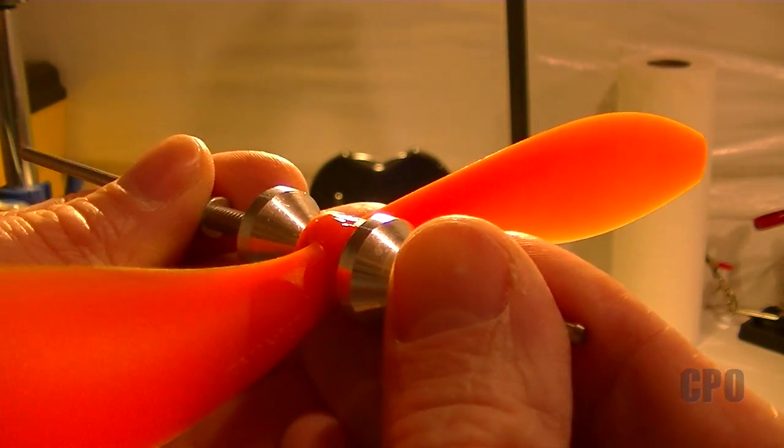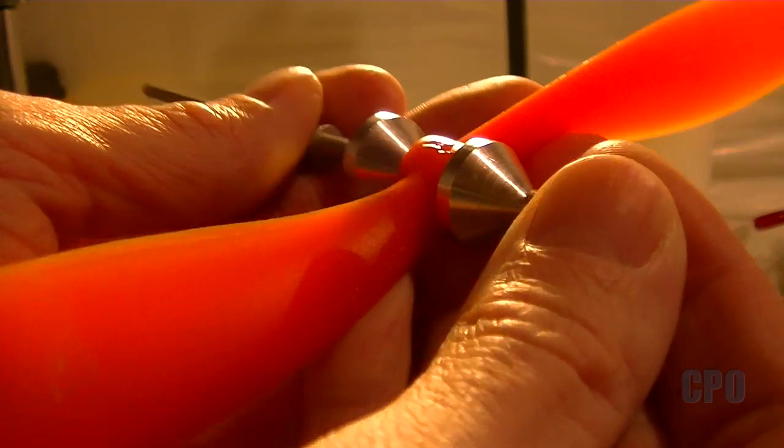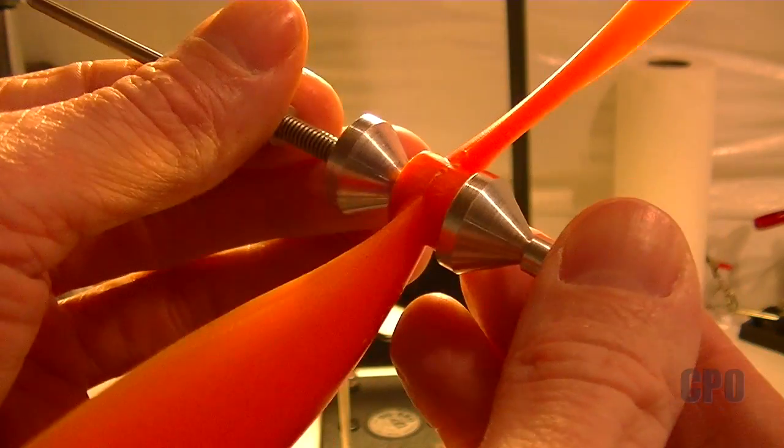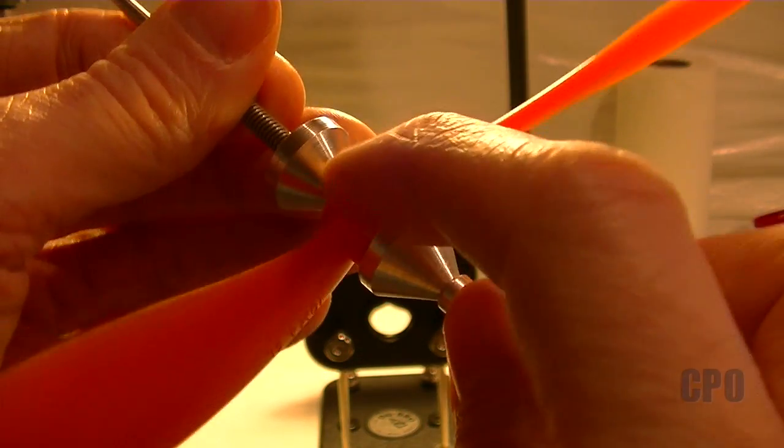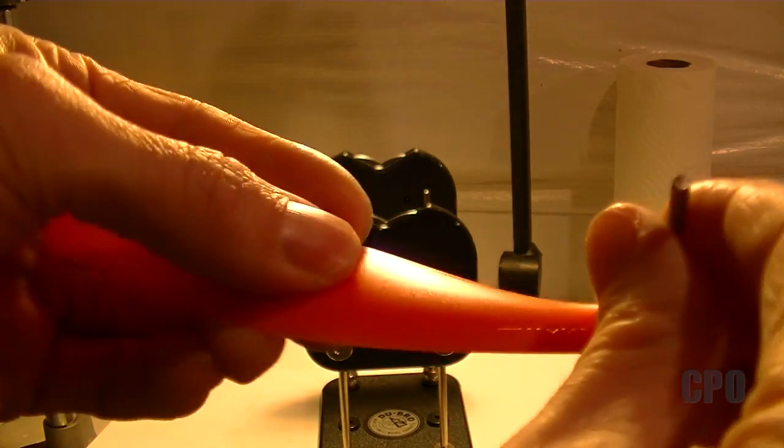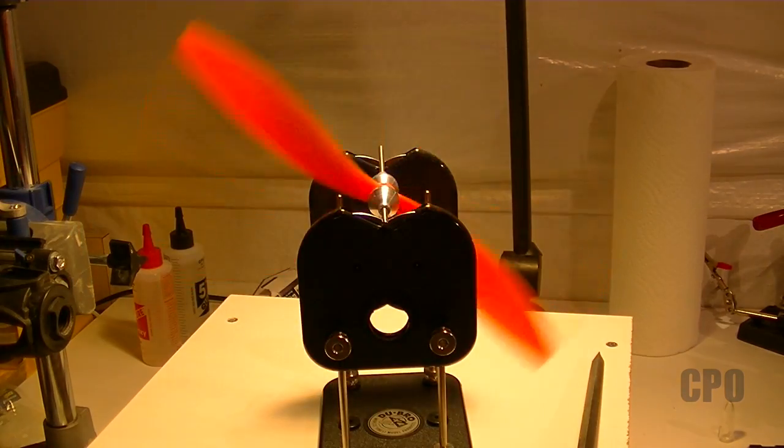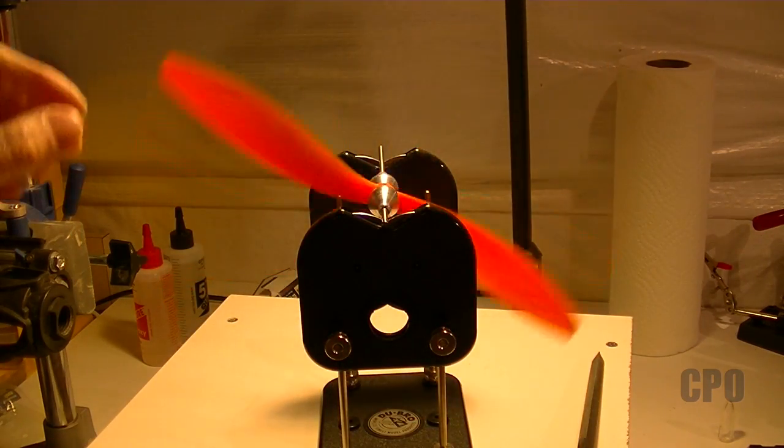But first, let's take a look at what I had to do to get this one balanced. I had a little bit of CA glue on one side of the hub to add some weight. And then on the other side of the hub, I had to remove some weight. And then I put a small piece of tape on one of the blades. And that about sums it up, and I think this one is good to go.